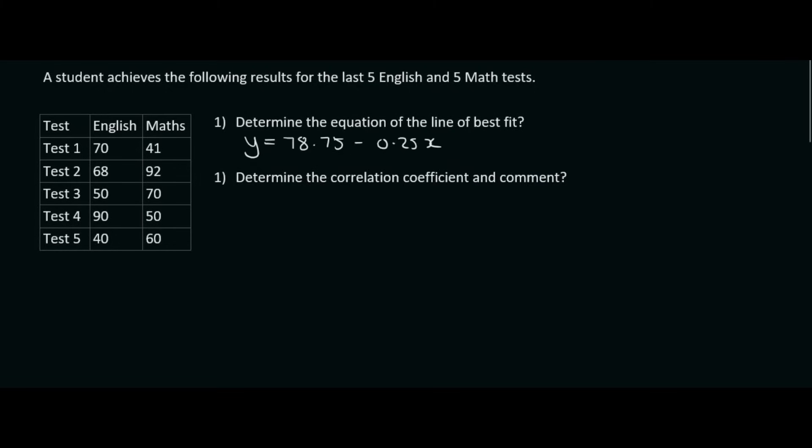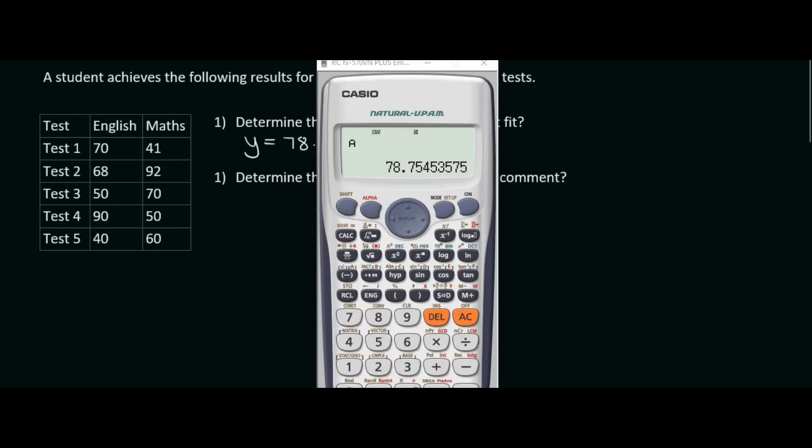The next thing we need to find the correlation coefficient. So remember correlation coefficient is your r value. So that's r. So that's what we're going to find next. So remember what you can do is you just go back to shift 1. You go to 5 for regression. And now we're looking for the r value, which is 3. Then you must push equals.